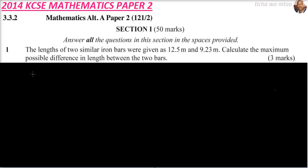This is 2014 mathematics paper 2, section 1. Section 1 consists of 50 marks and we are supposed to answer all the questions in this section. It consists of 16 questions, marks ranging from 2 to 4 marks, and it is compulsory. So you get short questions, 16 of them.